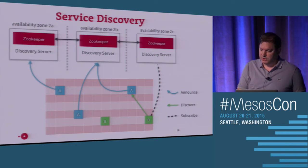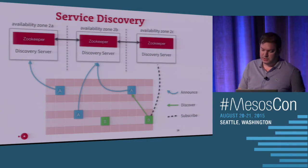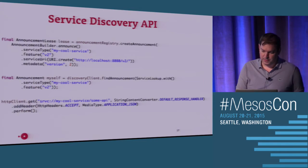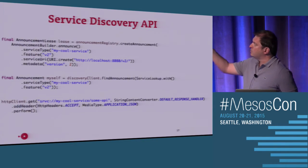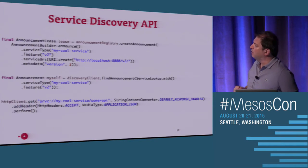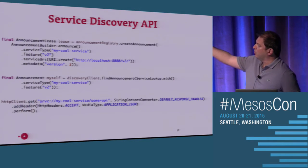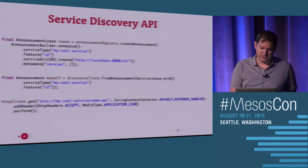It turns out this is also a proven solution that was existing at Ning, so it works very well and scales very well. This is the API: you announce, then you find somebody, and then you can create a request to that service.